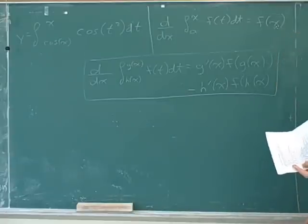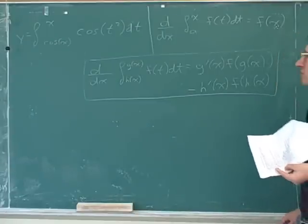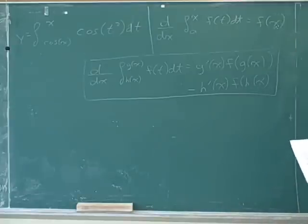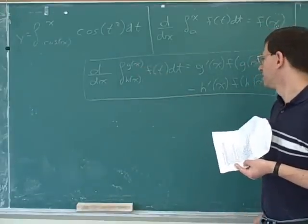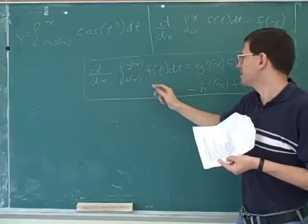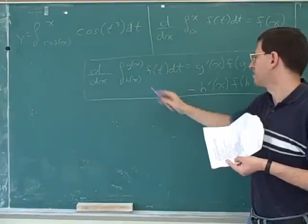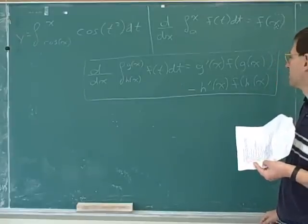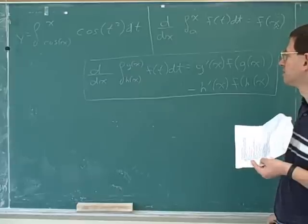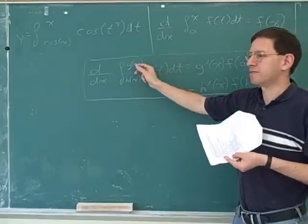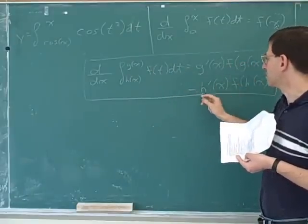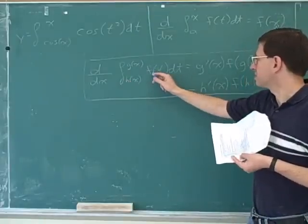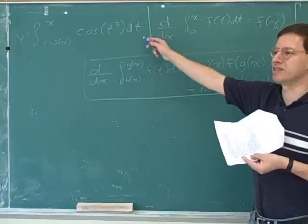That's complicated even to say what we're talking about. But here we're trying to take the derivative of a definite integral, and what we're taking the derivative with respect to appears in the limits of integration. So there's just a cookbook formula that we can use for that. It's a pretty complicated formula, but we can illustrate how it works for this problem. Basically, it's the derivative of the top limit times the function evaluated at the top limit, minus the derivative of the bottom limit times the function evaluated at the bottom limit.